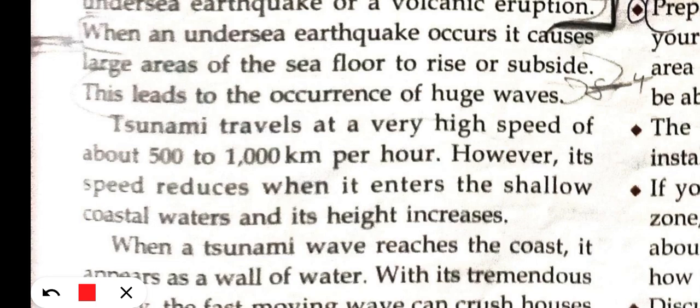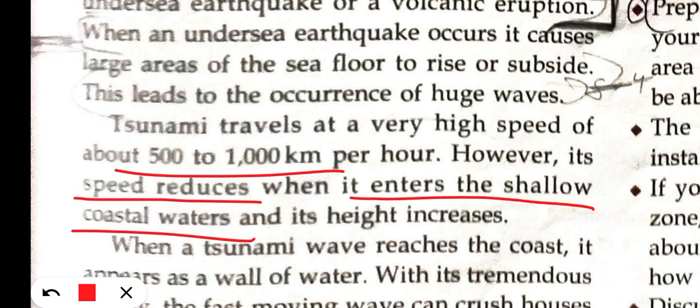Tsunamis travel at very high speed — 500 to 1000 km per hour. The speed is reduced when the water goes into shallow coastal water. As the depth decreases, the amount of water increases in level. This is called shallow water, and its speed is reduced here.